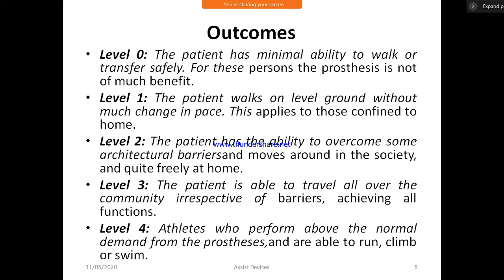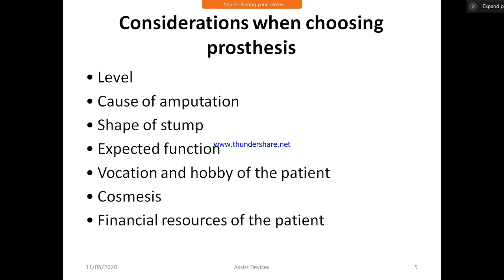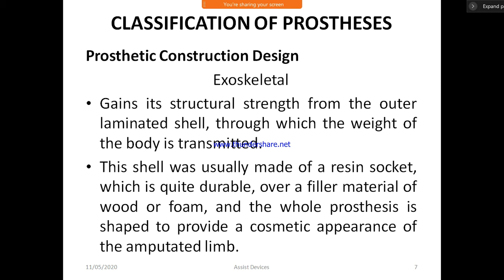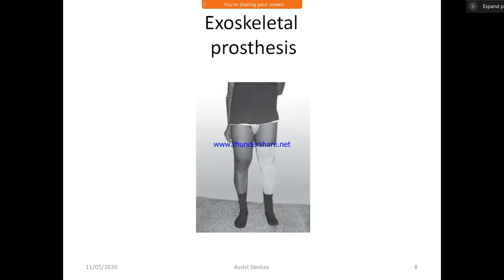Outcomes after rehabilitation are divided into five levels: Level 0 — the patient has minimal ability to walk or transfer safely; prosthetics are not of much benefit. Level 1 — the patient walks on level ground without much change in pace, applying to those confined to home. Level 2 — the patient can overcome some barriers and move around in the community. Level 3 — the patient can travel all over the community irrespective of barriers, achieving all functions. Level 4 — athletes who perform above normal demand from the prosthesis and can run.